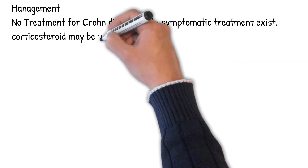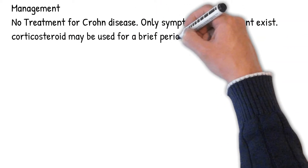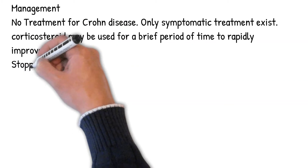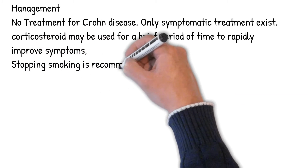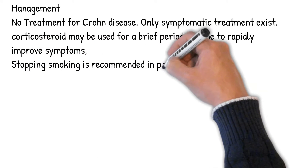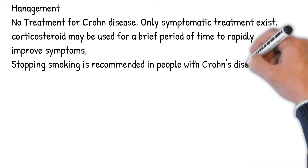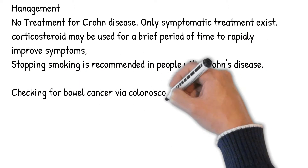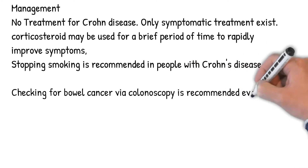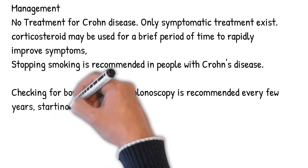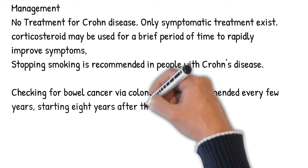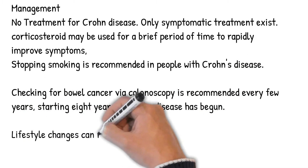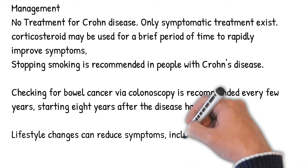There is no curative treatment for Crohn's disease — only symptomatic treatment exists. Corticosteroids may be used briefly to rapidly improve symptoms. Stopping smoking is recommended. Checking for bowel cancer via colonoscopy is recommended every few years, starting eight years after the disease has begun. Lifestyle changes can reduce symptoms, including dietary adjustments, elemental diet, proper hydration, and smoking cessation.